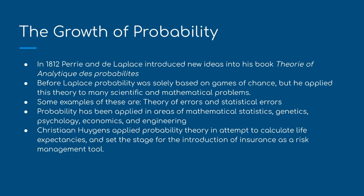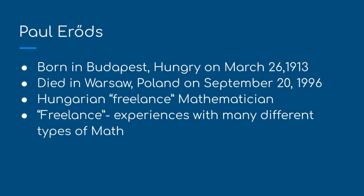Christiaan Huygens applied probability theory in an attempt to calculate life expectancies and set the stage for the introduction of insurance as a risk management tool. Paul Erdos, born in Budapest, Hungary on March 26th, 1913, and died in Warsaw, Poland on September 20th, 1996, was a Hungarian freelance mathematician — meaning he had experience with many different types of math.